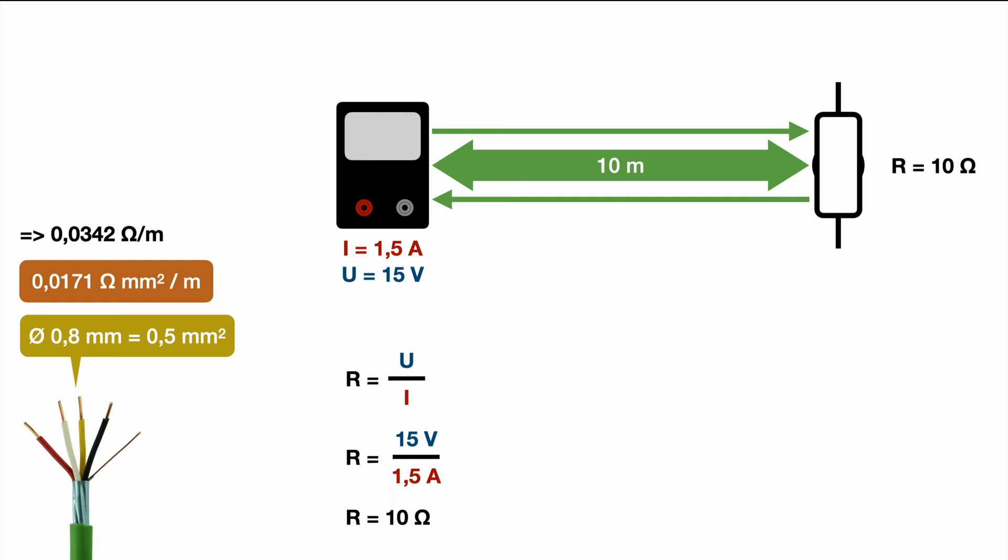So this 1.5 amps are not coming from nowhere. Those 1.5 amps are injected by your measurement device to have one static size. Because if you look at our equation at the bottom we have one unknown which is the resistance. We can measure the voltage but then we're still missing something else and that's the current which is so far a defined constant size of 1.5 amps in our example.